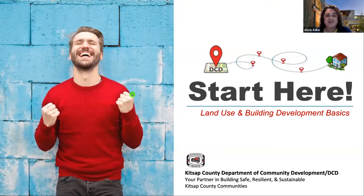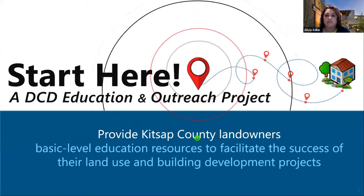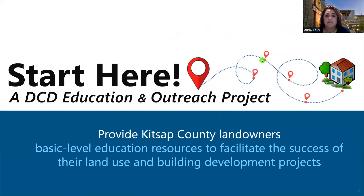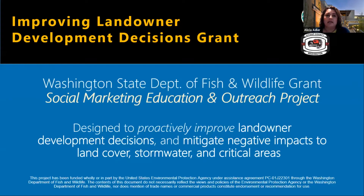The Start Here program — for those of you who have been here before, this is our fifth or sixth presentation. It is a land use and building development basics program. It provides basic level education resources to facilitate and support you with your land use and building development projects. It is conducted by a grant through EPA and the Washington Department of Fish and Wildlife, called the Improving Landowner Development Decisions Grant. It is a social marketing education and outreach program, and we would like to proactively improve landowner development decisions to mitigate any negative impacts to land cover, stormwater, and other critical areas.